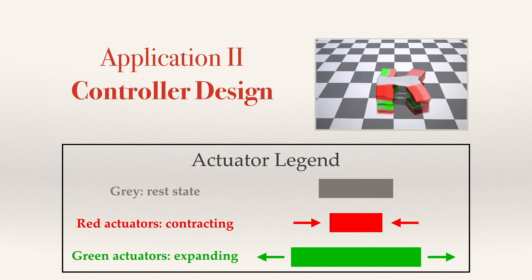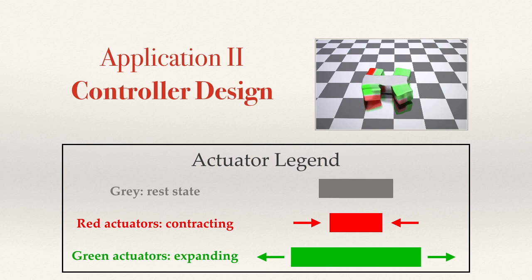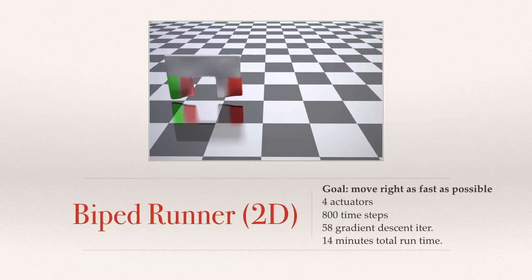More interestingly, we can use the gradients of the objective with respect to the controller parameters to directly optimize the controllers. Here, red actuators are contracting while the green ones are expanding. First, we optimize a 2D biped runner.